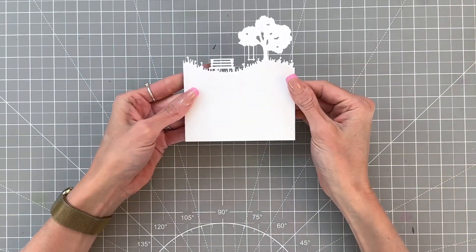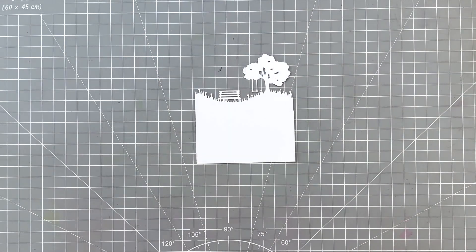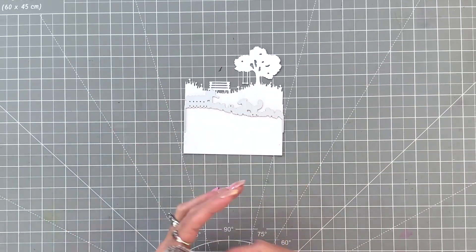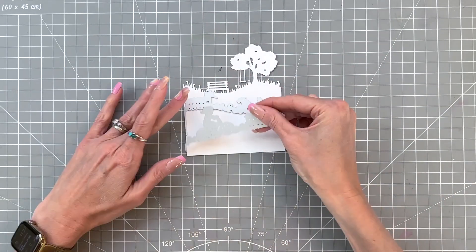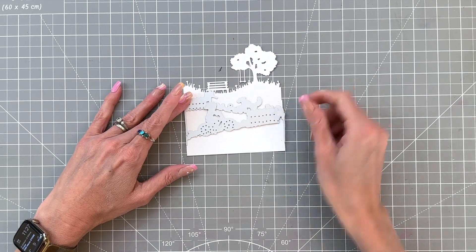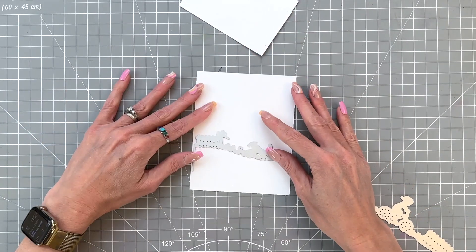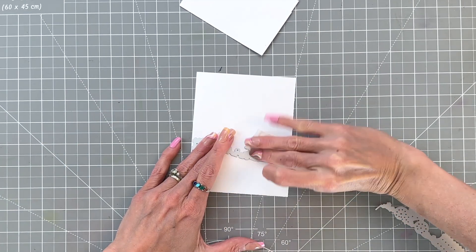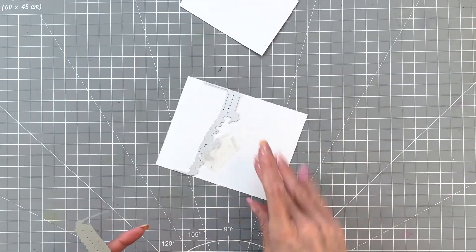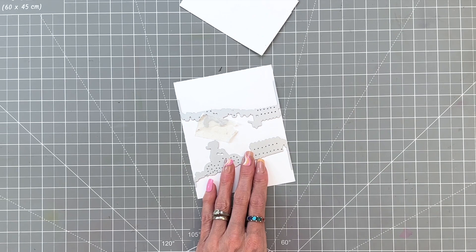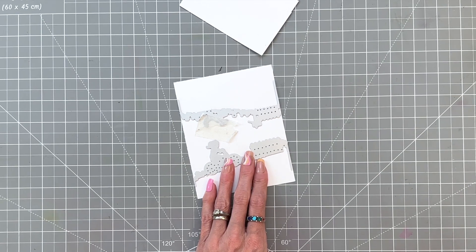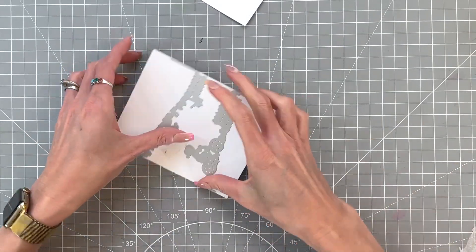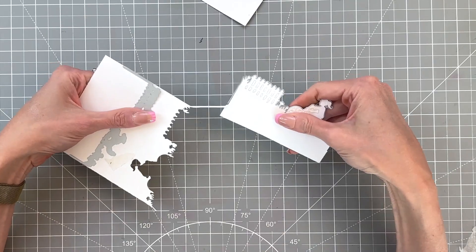Next up are the other two dies in that trifold fancy die set. The dog and mailboxes will be our middle layer, and then the girl on the bike will be our front layer. So I'm going to die cut those accordingly—the dog and mailbox will be a little bit longer than the girl on the bike. You can adjust these a little bit; I did make the dog and mailbox one a little short, and I can adjust that by sliding it up when it's behind the girl on the bike.